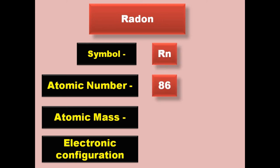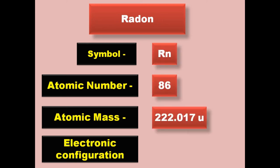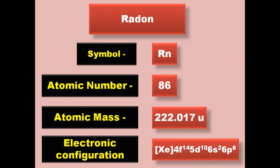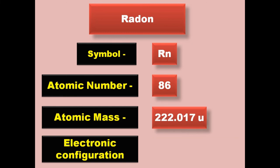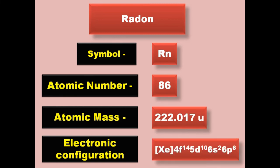Radon has symbol Rn, atomic number 86, atomic mass 222.017, electronic configuration [Xe] 4f14 5d10 6s2 6p6. Radon is a noble gas and exists in gaseous form at room temperature.